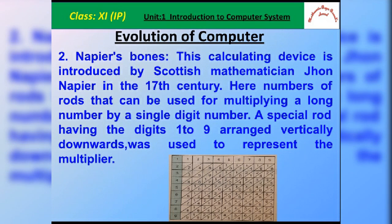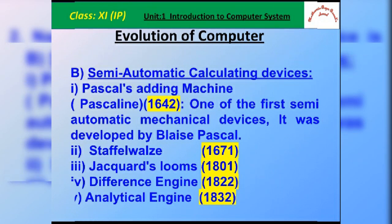The second manual calculating device is Napier's Bones. This calculating device was invented by the Scottish mathematician John Napier in the 17th century. Rods are used for multiplying a long number by a single digit number. Napier's Bones consists of special rods having digits 1 to 9 arranged vertically downward and was used to represent a multiplier.